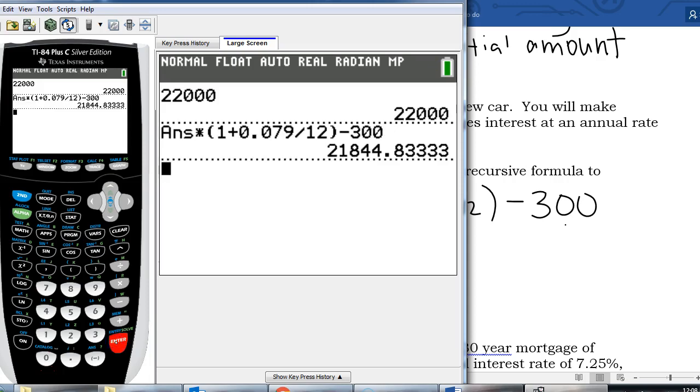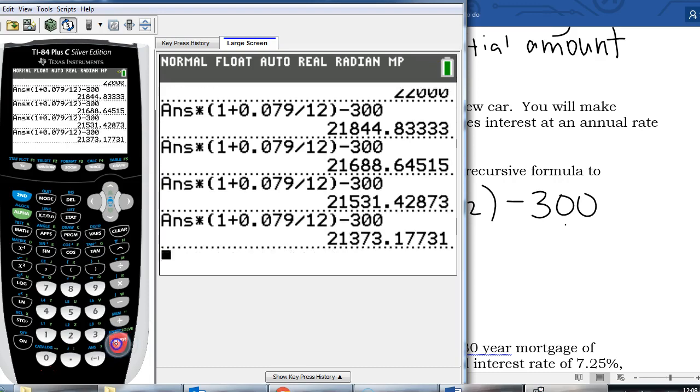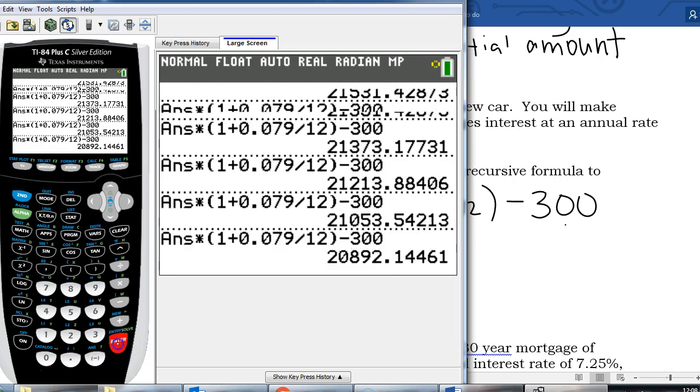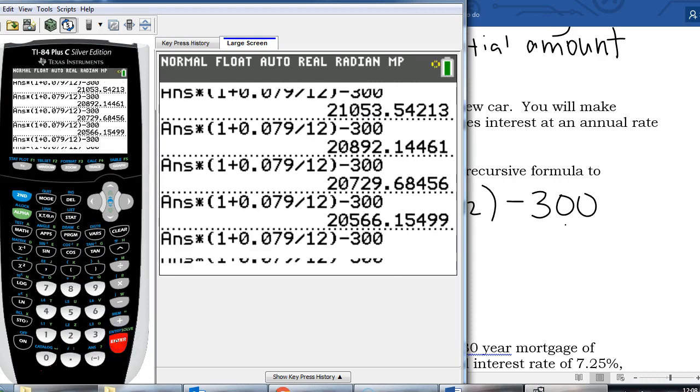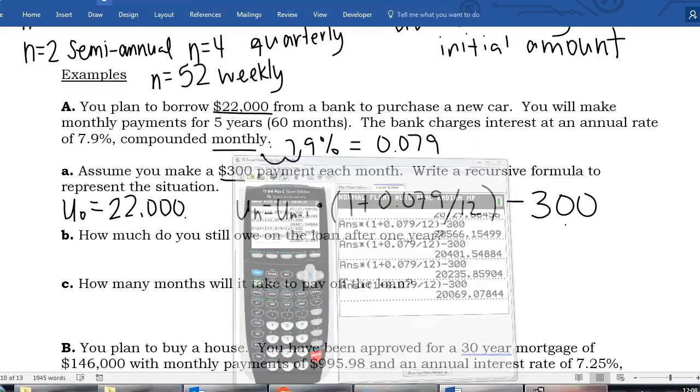1 plus our ratio compounding monthly and we're also going to subtract our monthly payment. And then every time I hit enter that's one month goes by. So enter again is two months went by and then three, four, five, six, seven, eight, nine, ten, eleven, twelve. Every time I hit enter it's like one month going by. So if I'm trying to get to one full year that's 12 months, so after 12 months of getting charged interest in making payments I still owe $20,069.08 on my car.